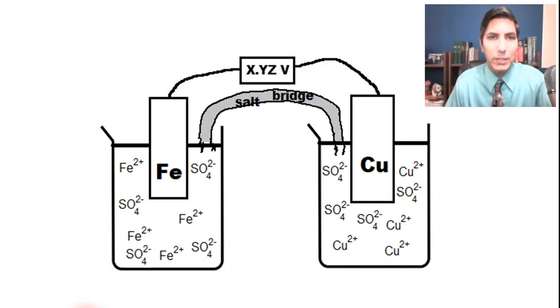Now let's take a look at this galvanic cell and label the parts and actually see what's happening here. Now we said earlier that with the iron, this is the half reaction that's taking place. The iron is turning into iron 2+ ions and it's losing two electrons. So that's the half reaction that's taking place right there.